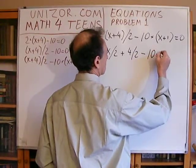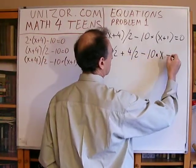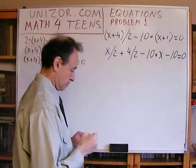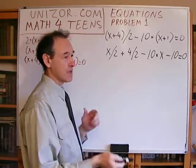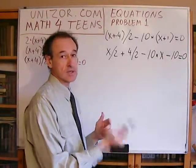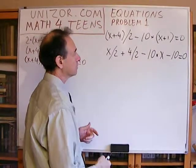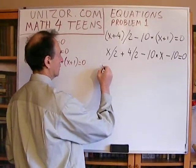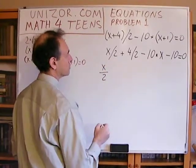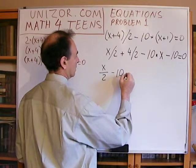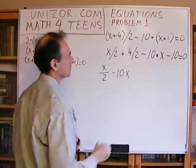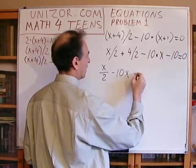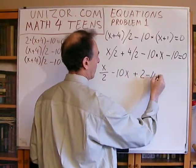So it's x divided by 2 minus 10 times x minus 10 equals 0. Using commutative and associative laws to rearrange, I have x divided by 2 minus 10x, and 4 divided by 2 is 2 minus 10 equals 0.